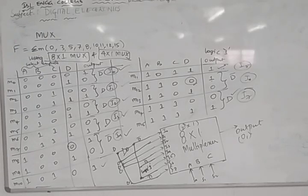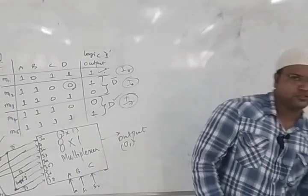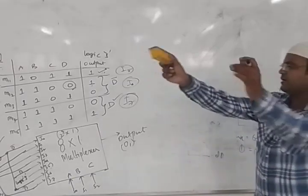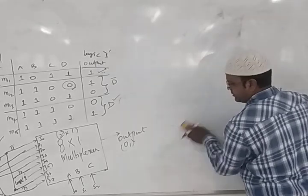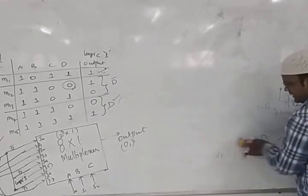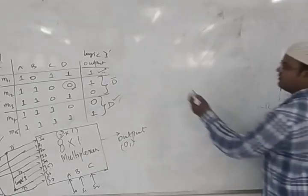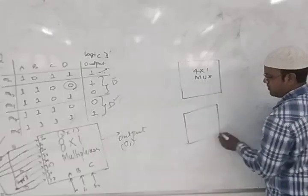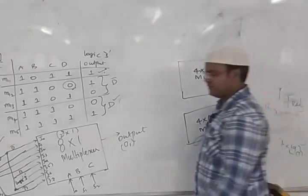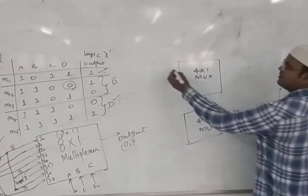Now we design the same function using 4-to-1 multiplexers. Since total combinations are 16 (4 variables), we use two 4-to-1 MUXes. The first handles I0 to I3 and the second handles I4 to I7. Both 4-to-1 MUXes share the same two select inputs A and B.